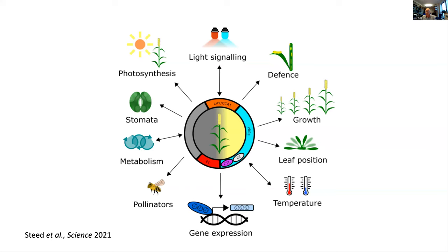This regulates a huge swathe of biology: gene expression, interactions with other organisms, growth, leaf movements, stomatal movements, photosynthesis, and metabolism. To have a useful circadian system it can only be useful if it can lock to the day and night cycle. That's done through light signals feeding into the clock to set circadian timing and temperature signals feeding in to regulate circadian timing. The clock also modulates both light signaling and temperature signaling such that the plant can interpret the time of day at which it is receiving those signals.